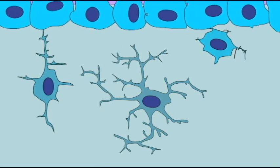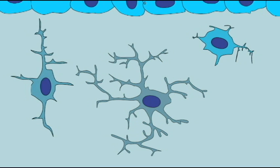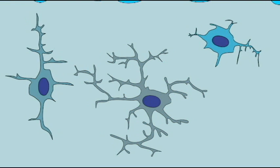Osteoblasts which get left behind differentiate and become the osteocytes in mature bone.